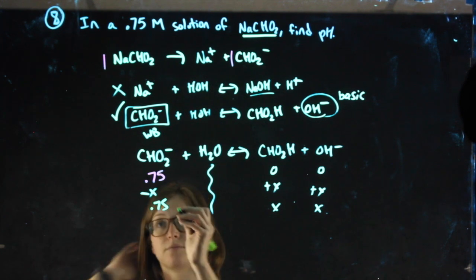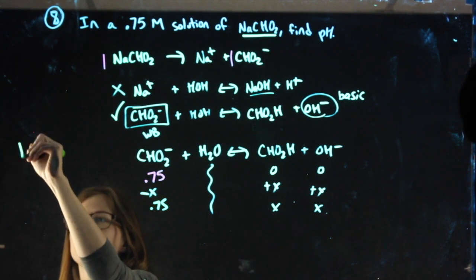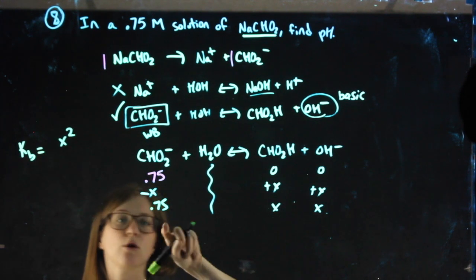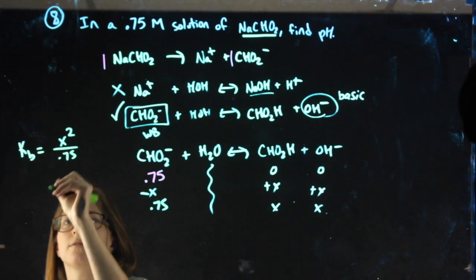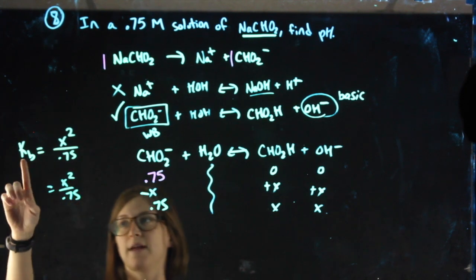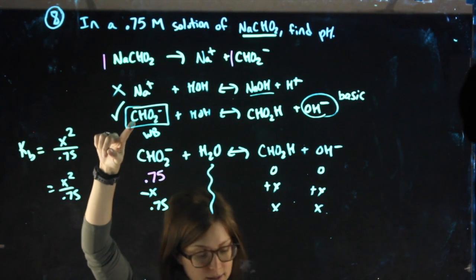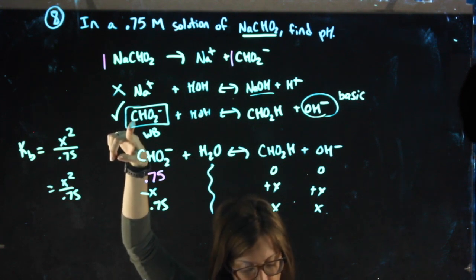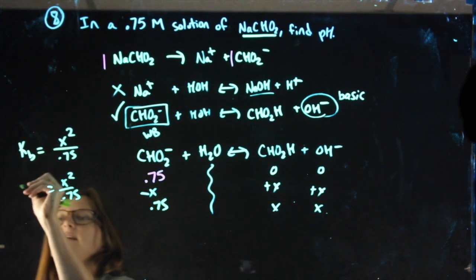Now that my ICE chart's done, because this is a weak base, I can do a KB equals products over reactants. I want the KB of my weak base. CHO2-, it's about halfway down the first column. 5.3 times 10 to the negative 11th.